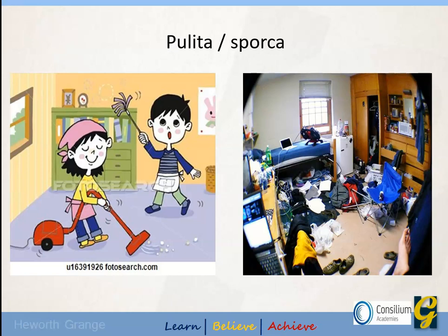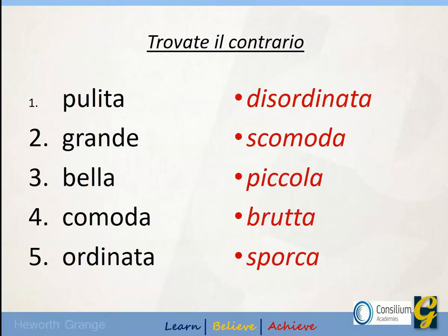The difference between pulita and sporca and ordinata and disordinata is more to do with tidiness versus cleanliness — you could have a messy room which isn't necessarily dirty. Allora, l'esercizio: trovate il contrario — find the opposites. Ci sono cinque parole. Fa una pausa. Le risposte: pulita — il contrario è sporca, dirty. Grande — il contrario piccola, small. Bella — il contrario è brutta, beautiful and ugly. Comoda — scomoda, comfortable and uncomfortable. E finalmente, ordinata — il contrario è disordinata.